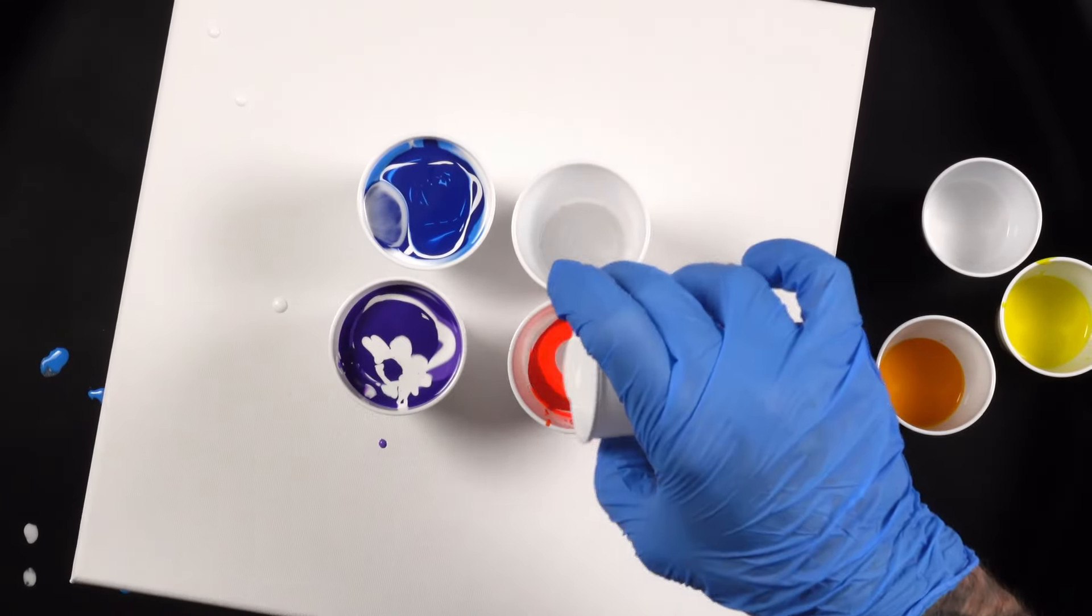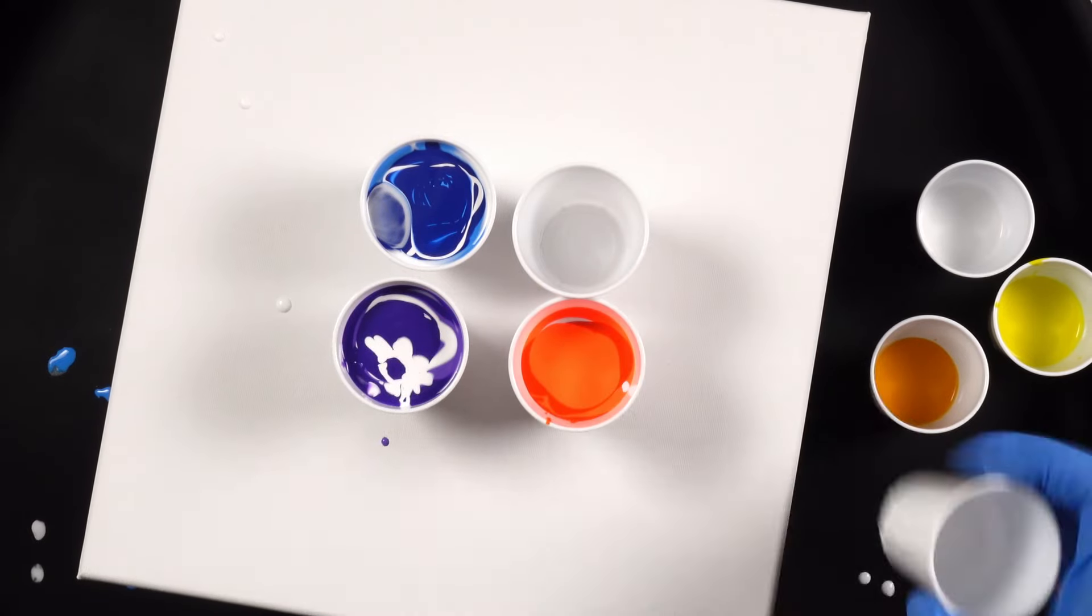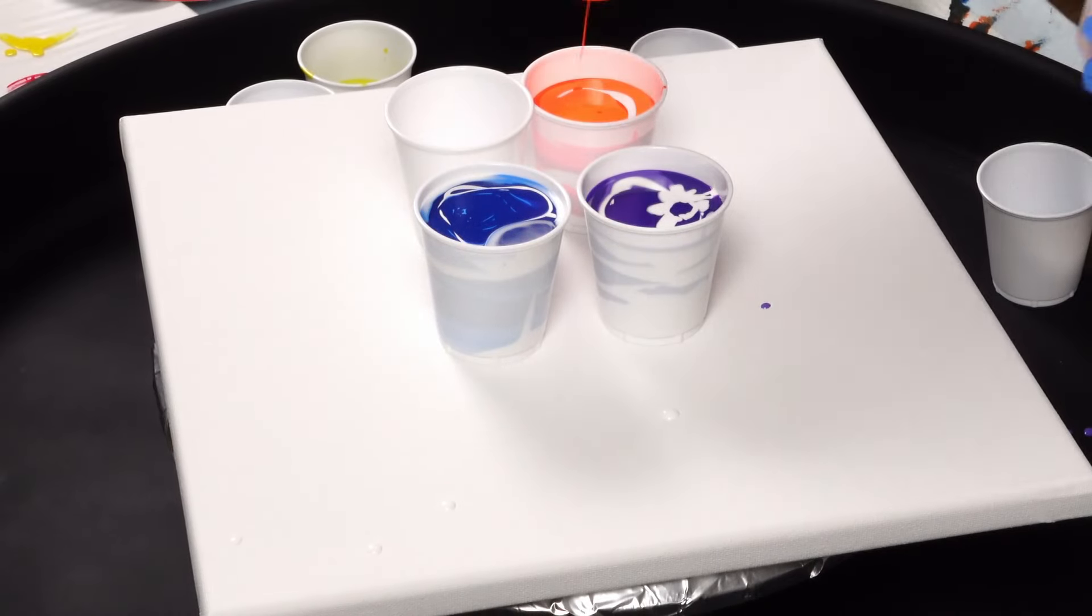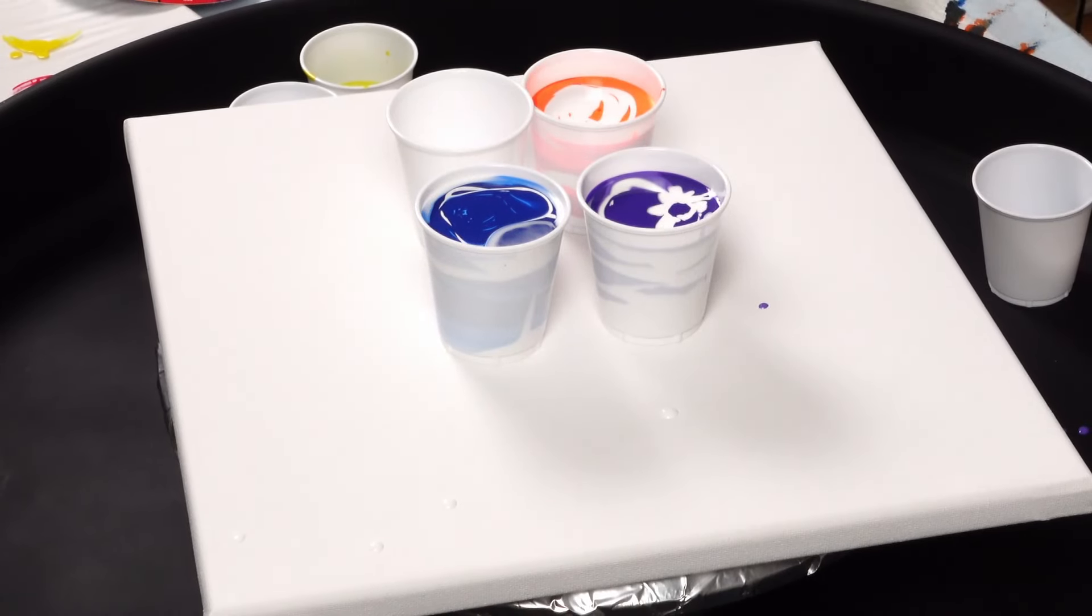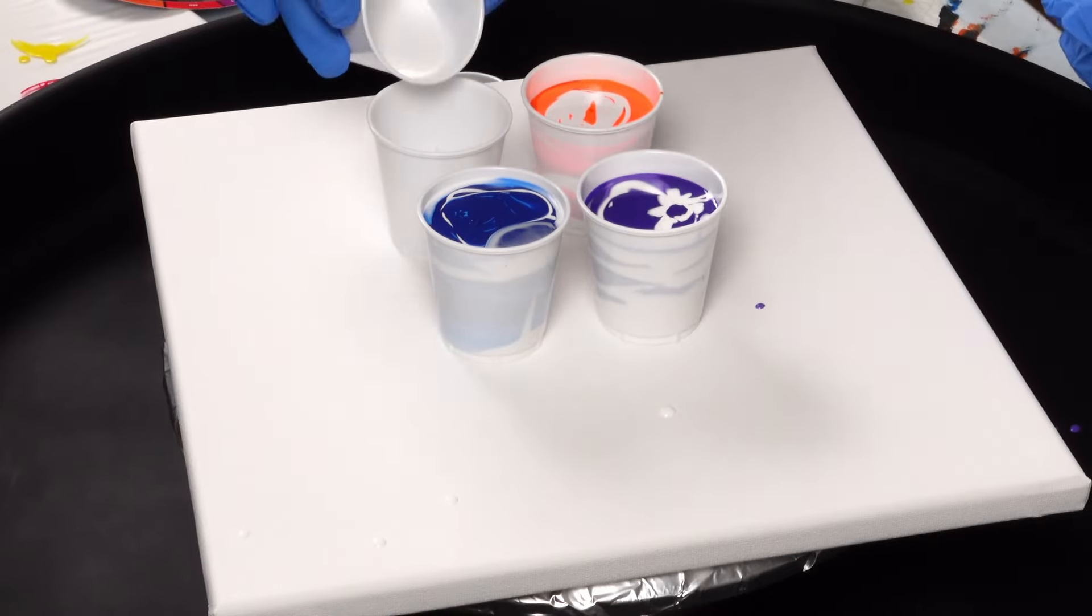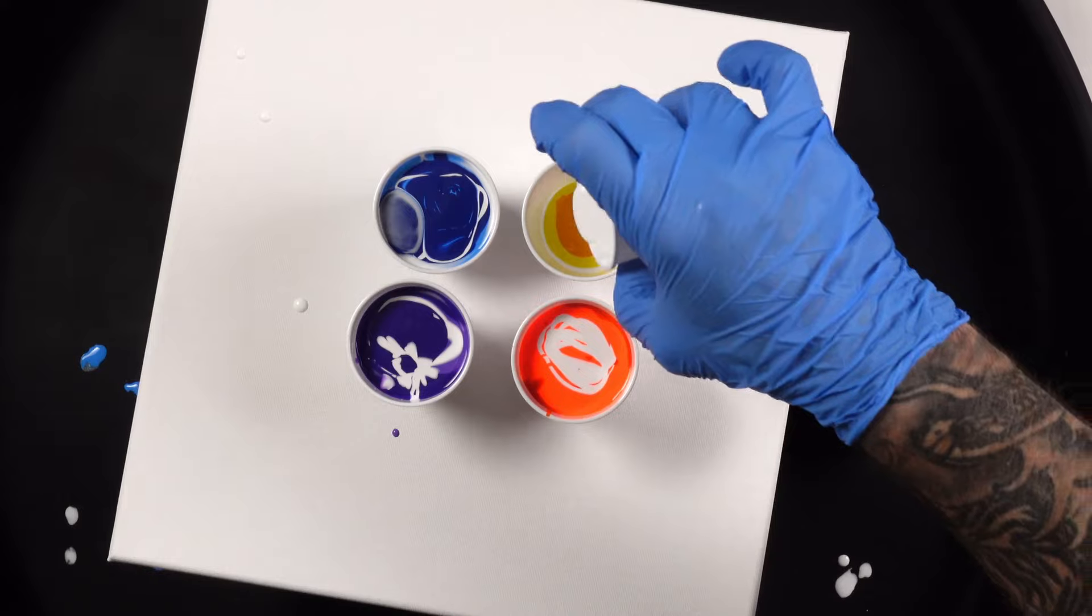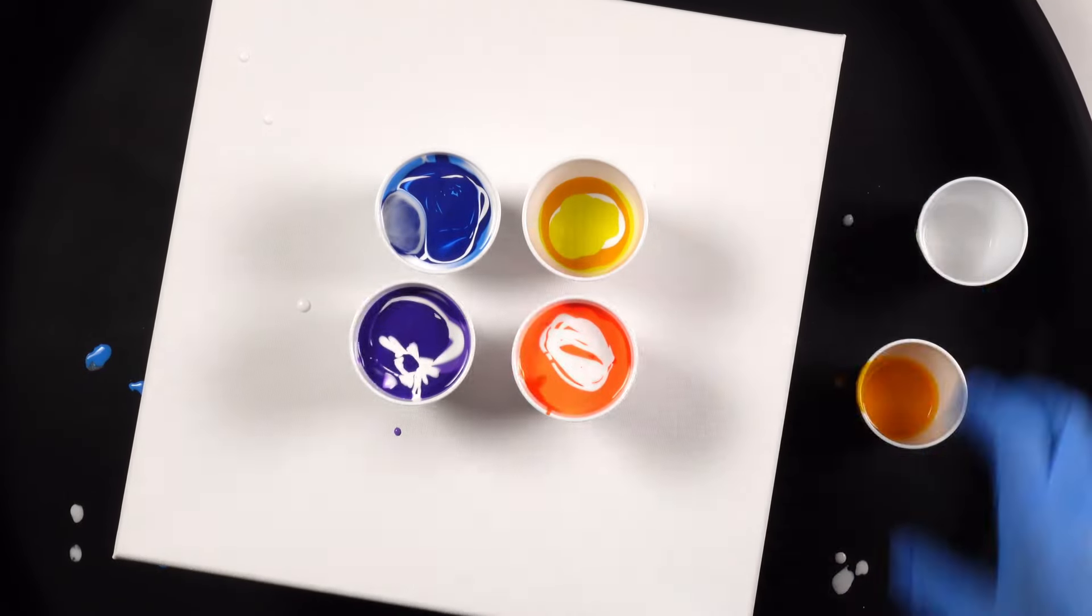Then I'm gonna swipe titanium white over the top of them. Keep in mind they're gonna be layered in the cups, so when they come out they're gonna have their own flows to them. Take the titanium white, swipe over top of it, hopefully leaving a thin layer of white. That is the dream.